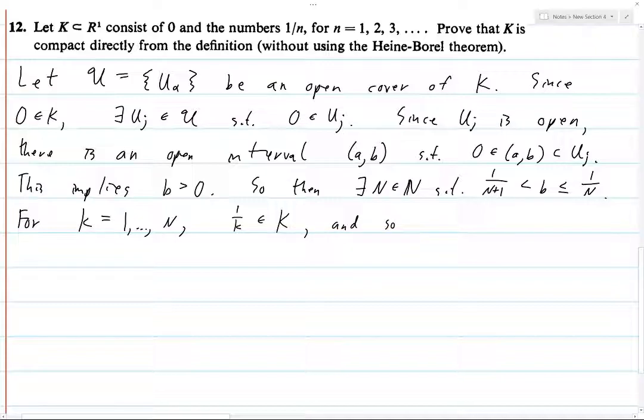and so there exists some U, and I'll say N, K, such that, well, let's call it U alpha K,